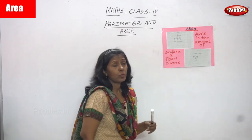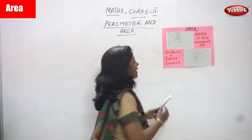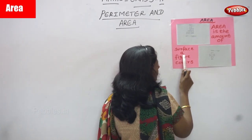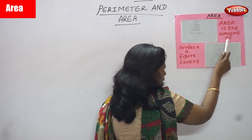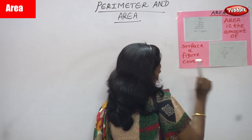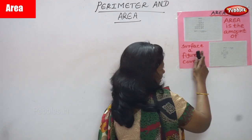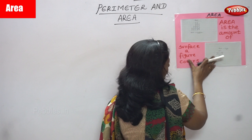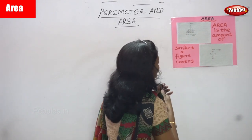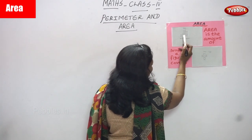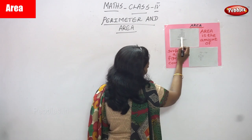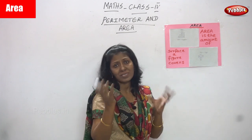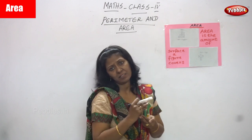Now we are going to see area. First, you must know the definition: area is the amount of surface a figure covers. That means perimeter refers to the outside surface, while area refers to the inside surface covered by the figure.